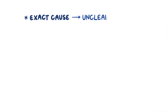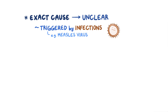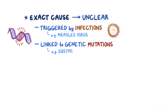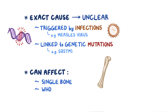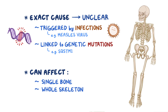The exact cause of Paget's disease of bone is unclear, but it can get triggered by infections like the measles virus, and is linked to genetic mutations like the SQSTM1 mutation which encodes a protein involved in regulating osteoclasts. When Paget's disease of bone occurs, it can affect a single bone or the whole skeletal system. Most often, it involves the skull, lumbar vertebrae, the pelvis, and the femur.